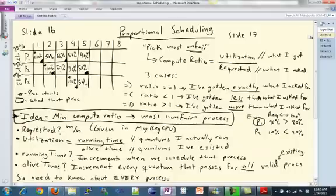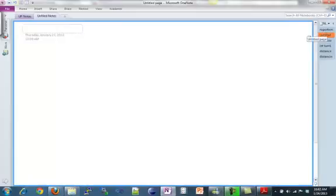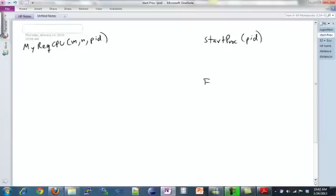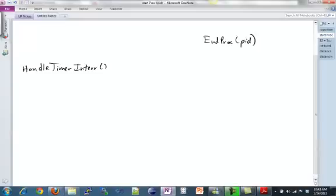Okay, so what does this actually look like for implementation-wise in your assignment? Well, there's like five functions that you have to worry about. There's MyRequestCPU, and that takes in M, N, and a process ID. There's StartingProc, which takes a process ID. There's EndingProc, also takes in a process ID. There's HandleTimerInterrupt, and there's ScheduleProc, which we'll deal with down here.